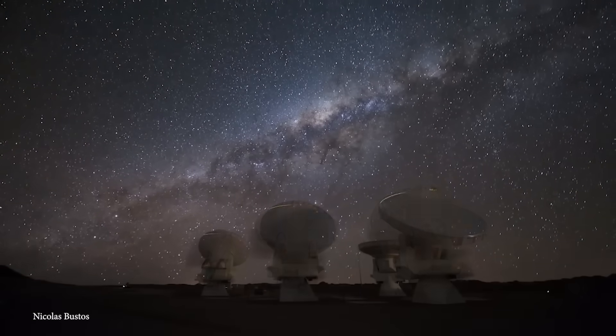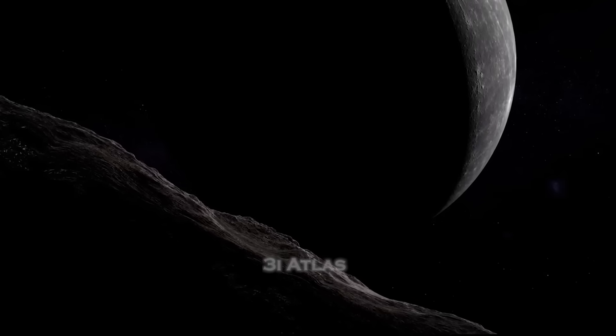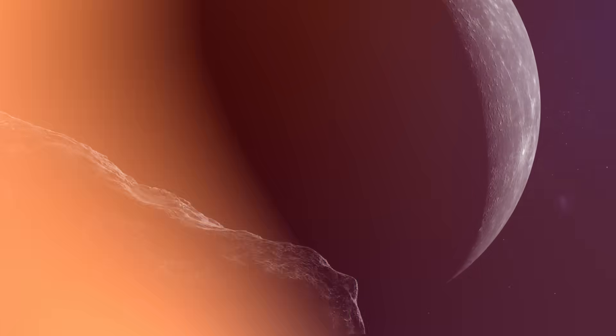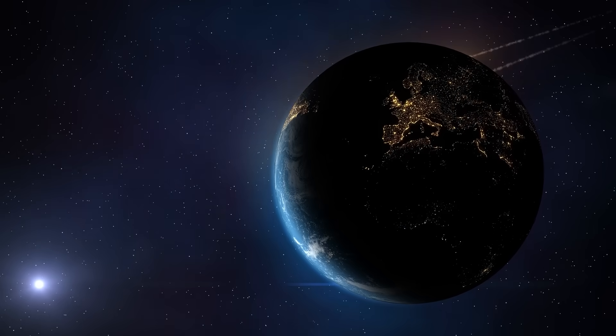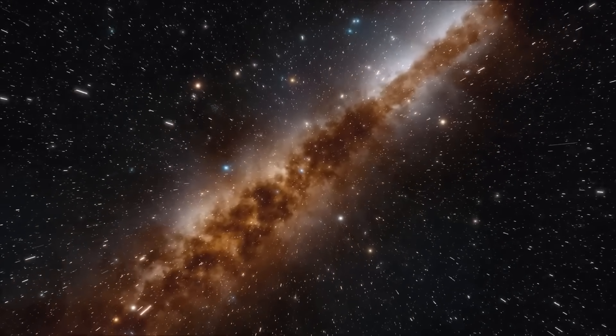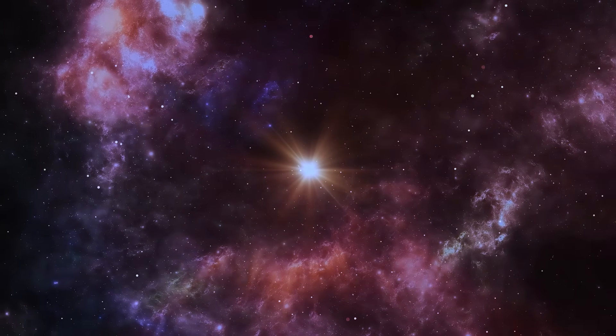As data poured in from telescopes around the world, a pattern began to emerge. 3i Atlas wasn't breaking just one rule, it was breaking all of them. Its orbit was almost perfectly aligned with the ecliptic plane, within five degrees of the path followed by Earth and the other planets. A coincidence so improbable that Loeb called it the equivalent of hitting a cosmic bullseye in total darkness.